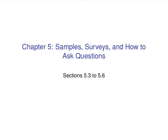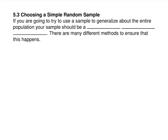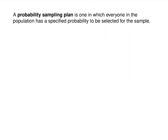In this lesson we are going to talk about how to properly choose samples so that you can use the results of a survey to say something about your population. If you're going to try to use a sample to generalize about the entire population, your sample should be something called a simple random sample, which means people are chosen at random and you didn't inadvertently make it more likely for one group to be chosen than another. A probability sampling plan is how you decide to choose your simple random sample.